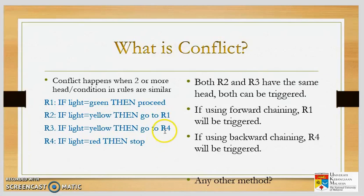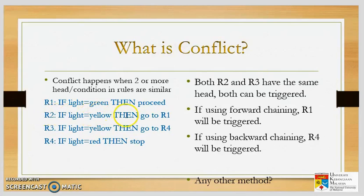In Malaysia, the yellow traffic light means the light is turning to red. But in the UK it's the other way round — yellow means it's turning to green. So both R2 and R3 have the same condition and both can be triggered. If we use forward chaining, we read from the first rule. When we reach R2 and the light is yellow, rule number two will be triggered, then go to R1, so R1 will be fired. If we use backward chaining, R4 will be fired.